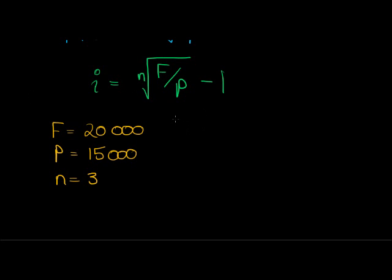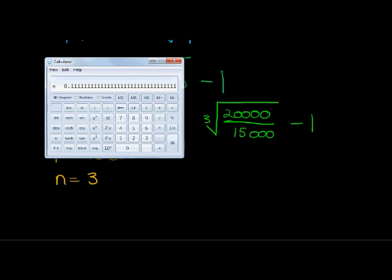Now if we substitute all of this, we get the cube root of 20,000 divided by 15,000 minus 1. Let's see what that gives us. We take 20,000 divided by 15,000. This is what comes underneath the square root. We're going to put this, not the square root, the cube root. We take the third root of that, and we get that answer. We subtract 1, and here it gives me 0.100642.